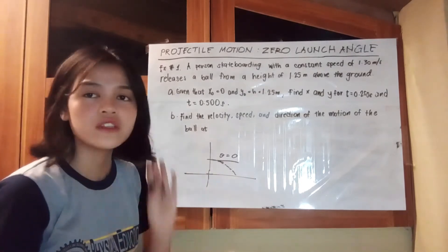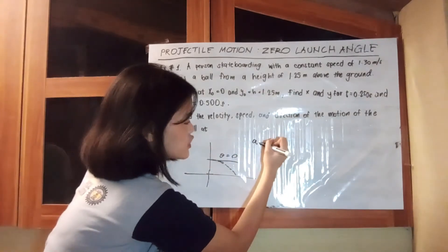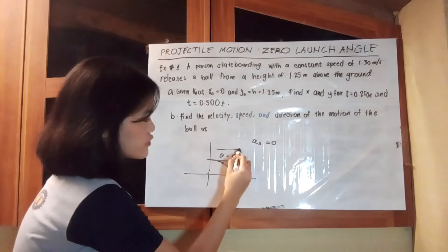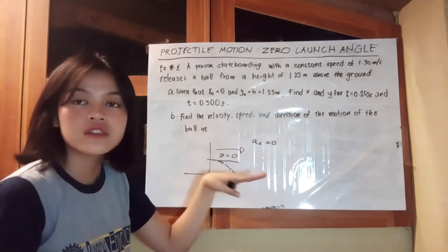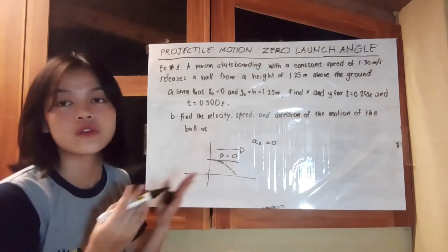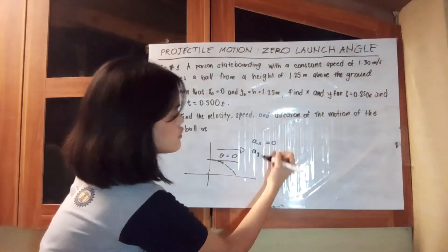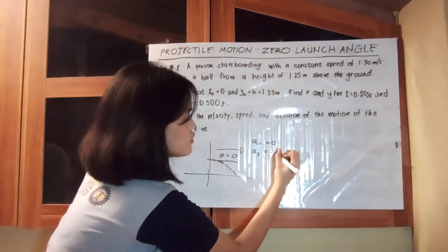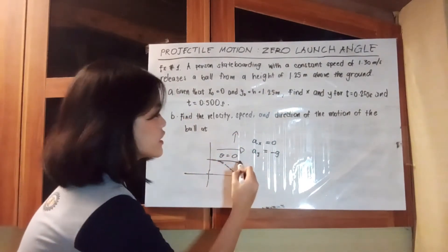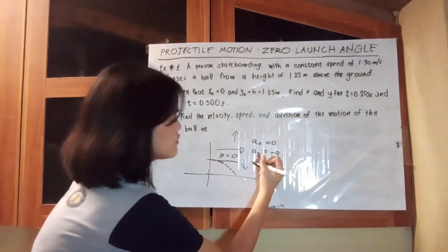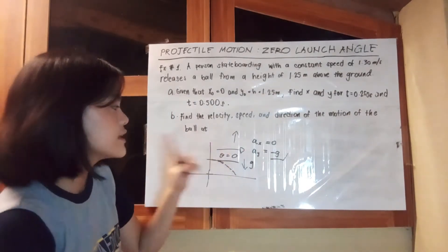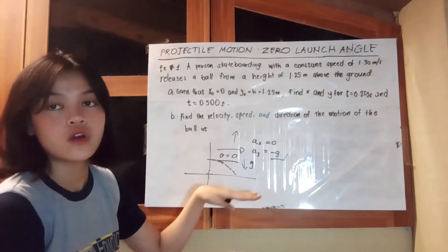In projectile motion, the acceleration of the x-component is zero, because the motion moves in a constant speed and is not changing. When there's no change in velocity, there's no acceleration. For the acceleration of the y-component, on the other hand, it is equivalent to negative gravity. Considering upward as positive, downward is negative — since gravity acts downward and is parallel to the y-axis, it belongs to the y-component.